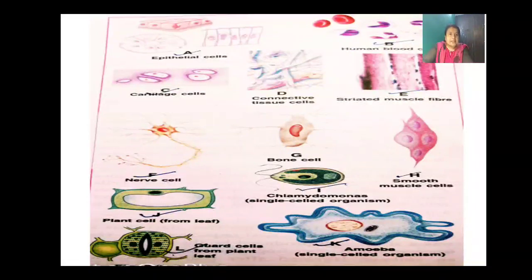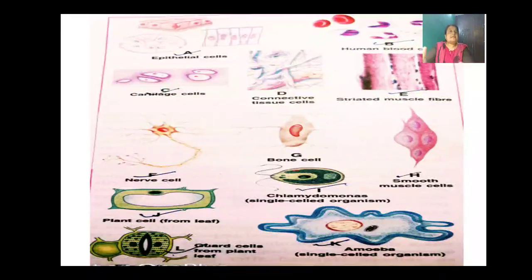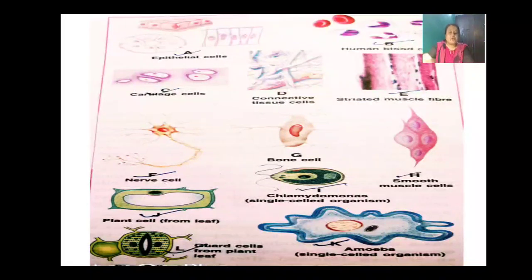The guard cells of the stomatal pore can be seen in the corner. Where are guard cells found? They are found in the epidermal layer of leaves. Guard cells are bean-shaped, and two guard cells surround an epidermal cell to form a stoma — the opening or pore in the leaf through which diffusion of gases takes place in the plant's body during photosynthesis. They help in the opening and closing of the stomata.